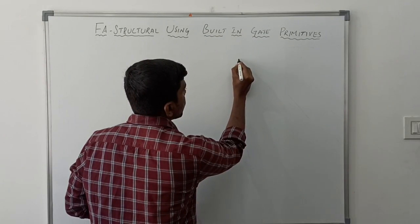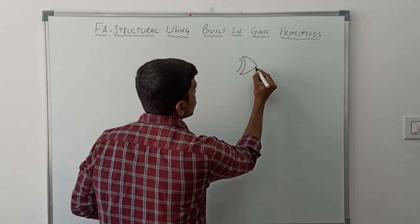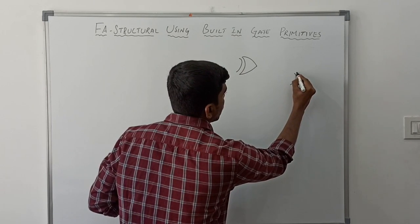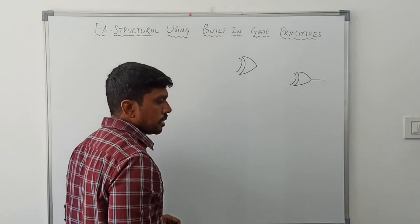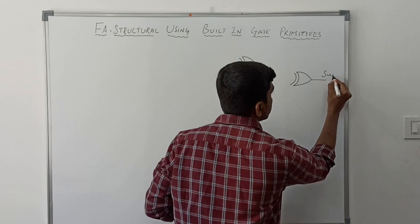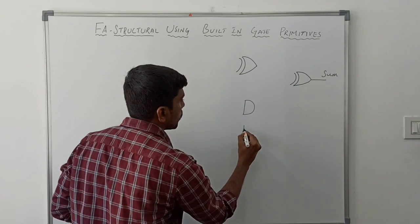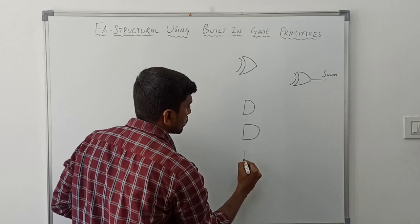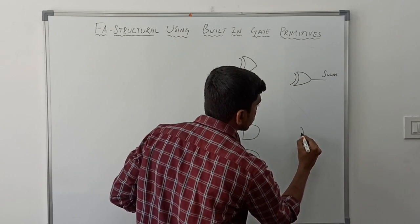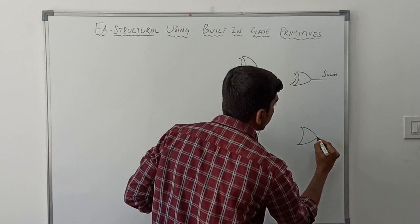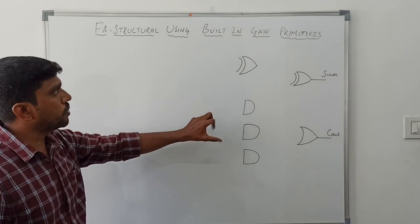In this full adder circuit we use two XOR gates — the first XOR gate and the second XOR gate. From the second XOR gate we take the output sum. Three AND gates are used in the full adder circuit, and one OR gate. The output of the OR gate is called C-out. This is the structure of the full adder circuit.